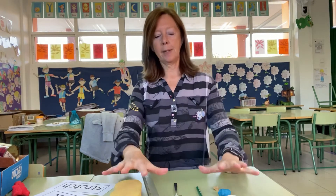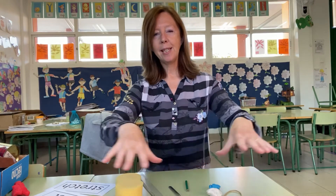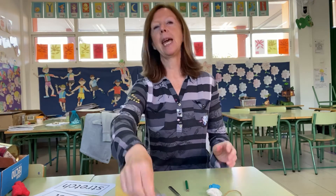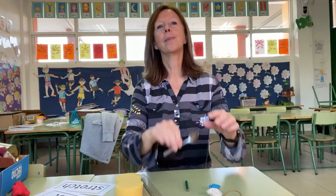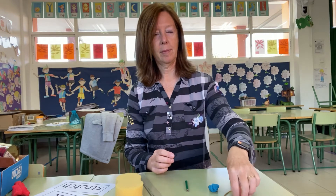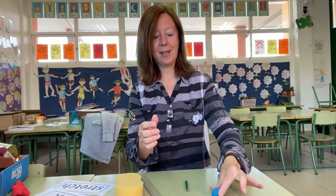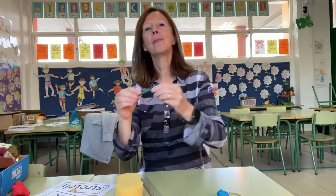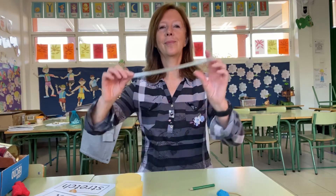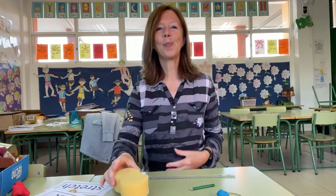Now it's time to investigate. We've got some different objects and materials to investigate today. We've got some fabric, a spoon, a stone, an elastic band, some plasticine, a pencil, a ruler and a sponge. See if you've got those materials in your house. Pause the video and have a look.